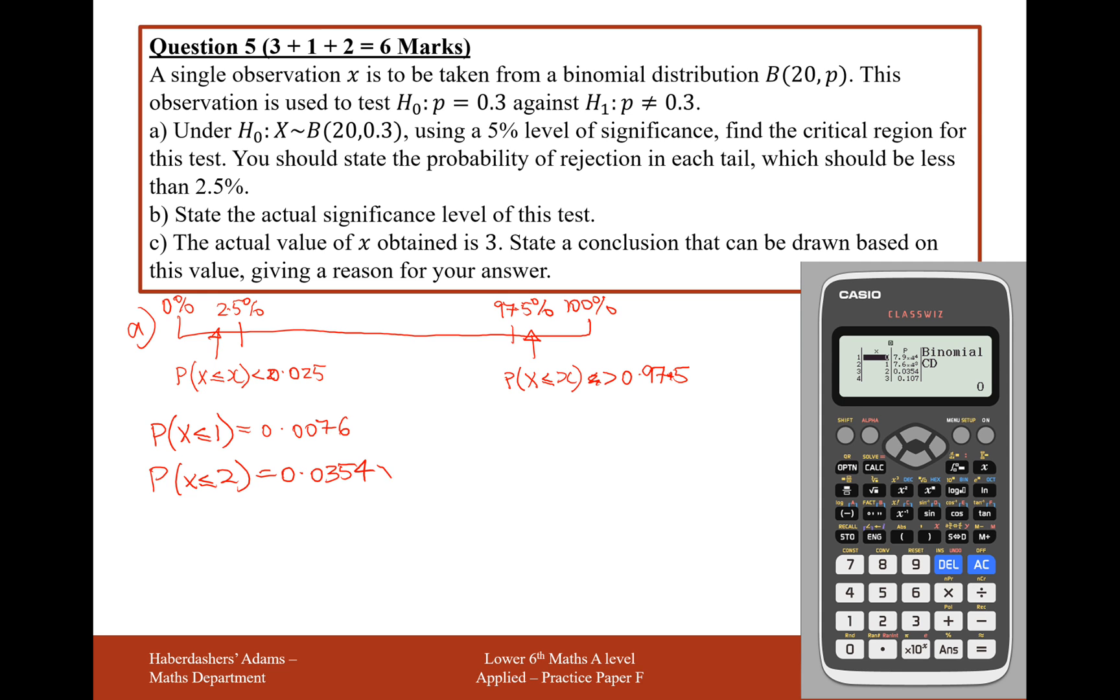Now this one here, this is too big. This is more than 2.5%. So this is what we're going to have to take as our lowest bound of X. So 1 here, if we get 1 head out of 20, then it's probably not going to have a probability of 0.3. Or if it's 0 as well, it's probably not going to have a probability of 0.3.